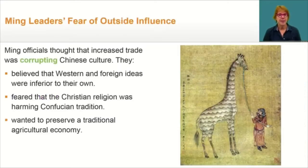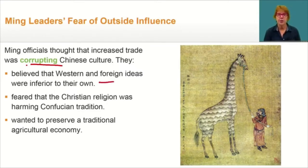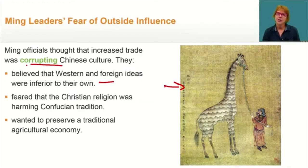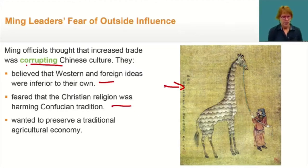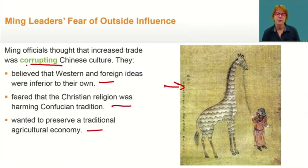Ming officials believed that increased trade was corrupting Chinese culture. The Chinese believed that China was a superior nation and culture, and that Western and foreign ideas were inferior to their own. China's change of heart was also in response to the voyages of Zheng He, which Confucian leaders felt were too expensive and too dangerous to Chinese culture. They feared that the Christian religion was harming Confucian traditions, and they wanted to preserve a traditional agricultural economy. Increased trade with Europe would result in more people manufacturing silk and porcelain instead of growing food. As a result, the Chinese government decided to limit contact with foreigners.